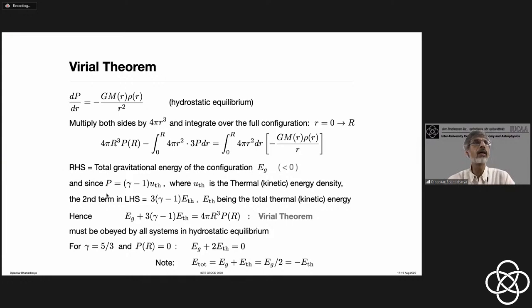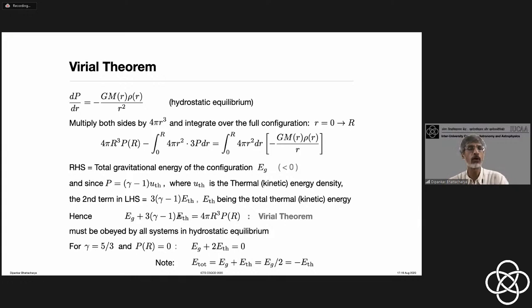Welcome. We will continue with the description of structure of stars. We looked at the Virial Theorem, which we went through the derivation yesterday, starting from the hydrostatic equilibrium equation. We have noted that the general form of the Virial Theorem says the gravitational binding energy plus three times the adiabatic index minus one, times the thermal energy — the total kinetic energy — is the energy responsible for pressure.